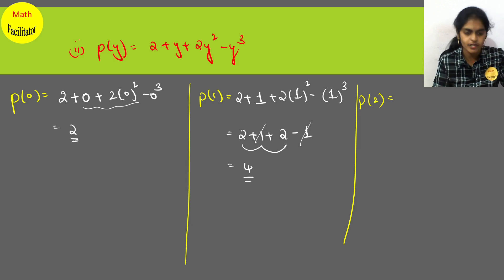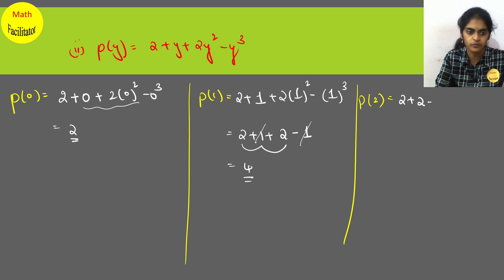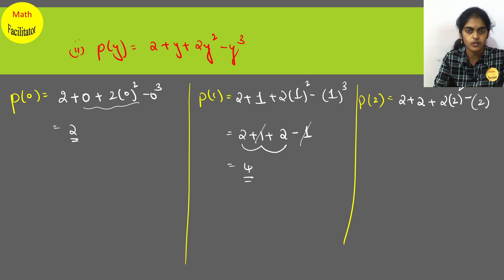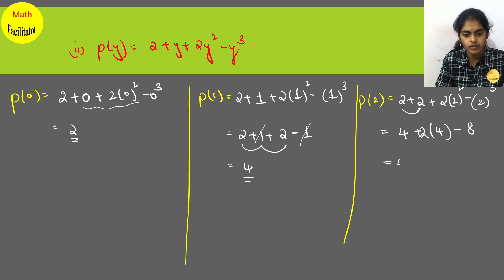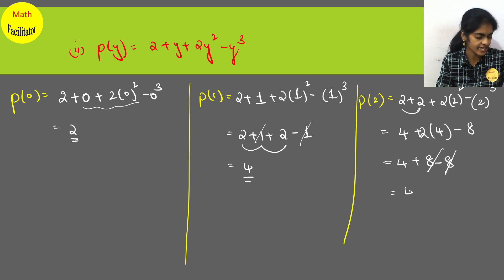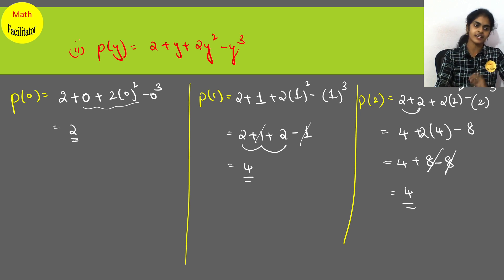Now p(2): substitute 2 for y. So 2 plus 2 plus 2 into 2² minus 2³. That equals 4 plus 2 into 4 which is 8, minus 2³ which is 8. So plus 8 minus 8 cancel, and the answer is also 4.